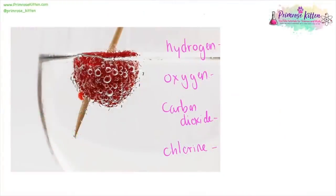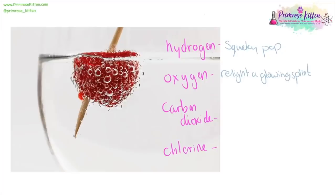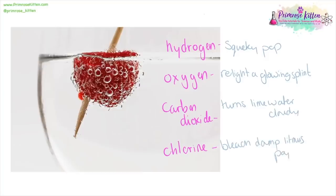In an experiment, when you see bubbles coming off something, chances are it's going to be one of these four types of gases: hydrogen gas, oxygen gas, carbon dioxide, or chlorine gas. To test for hydrogen gas, it is a squeaky pop. To test for oxygen gas, it is going to relight a glowing splint. Carbon dioxide turns limewater cloudy, and chlorine gas is going to bleach damp litmus paper.